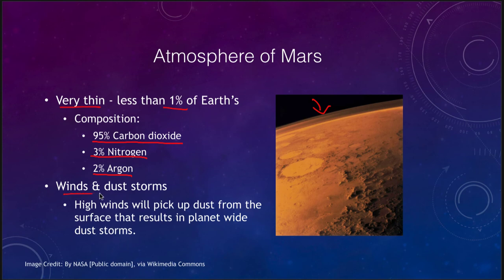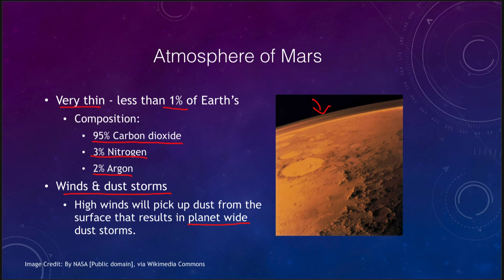The thin atmosphere does have some very high winds and dust storms, where high winds pick up dust from the surface resulting in dust storms that engulf the entire planet — they don't just cover part of Mars as a large dust storm might cover part of the Earth, they can cover the entire planet. It's a very thin atmosphere — thick enough to worry about friction when landing, but not thick enough to breathe.